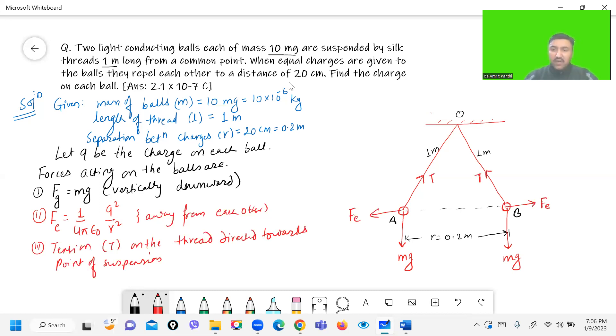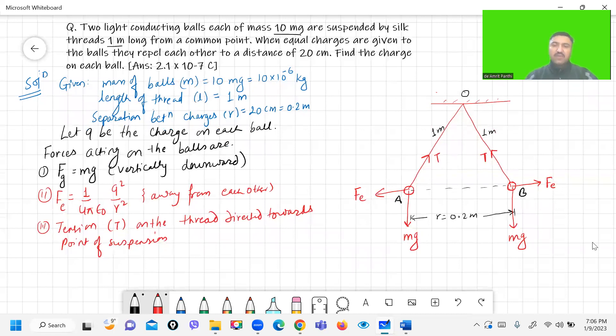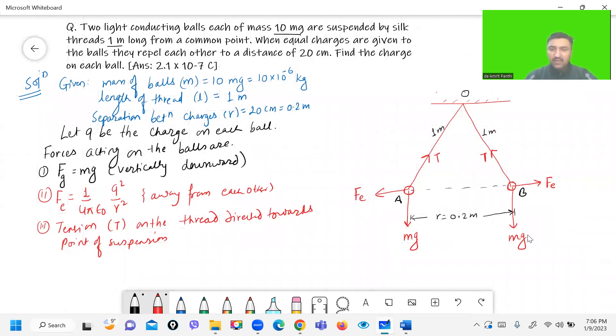Now since the balls are in stationary condition, the sum of all the forces must be equal to zero. For ball A, the forces are Fe, T, and mg. So to add all these forces we will find out the component of T by finding out this angle theta between a perpendicular line from point of suspension.